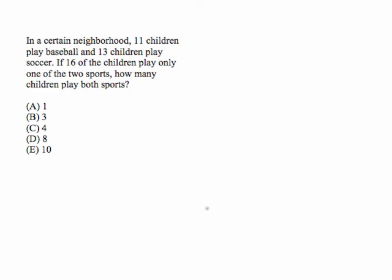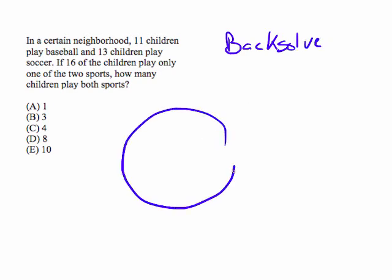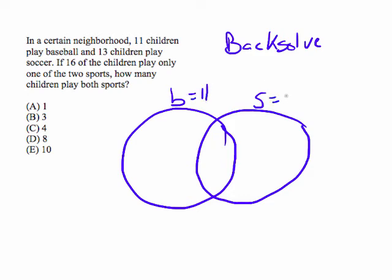Now let's try a question that's a little more like what you'd see on the SAT. So here's a question I wrote. In a certain neighborhood, 11 children play baseball and 13 children play soccer. If 16 of the children play only one of the two sports, how many children play both sports? Now I usually recommend just back-solving on a question like this, and I'm going to show you the algebra too, but I just want to very quickly remind you how cool back-solve is. So let's draw our Venn diagram. This is our baseball and our soccer. Here, and if I have 11 children playing baseball, so I know my baseball equals 11 in total, and I know my soccer equals 13 in total.